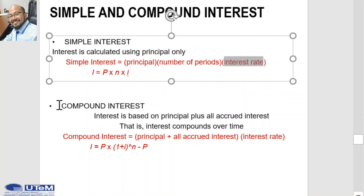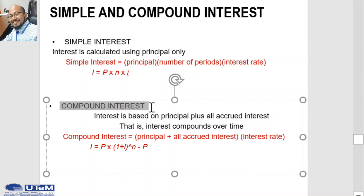How about compound interest? What's the difference between simple and compound interest? In most financial and economic analysis, we use compound interest calculations. For compound interest, the interest accrued for each interest period is calculated on the principal plus the total amount of interest accumulated in all previous periods. Thus, compound interest means interest on top of interest.